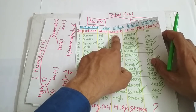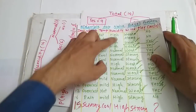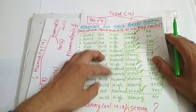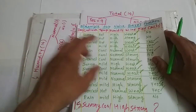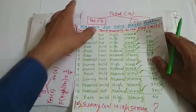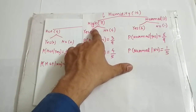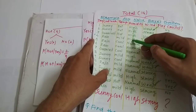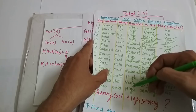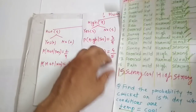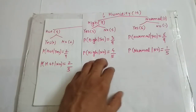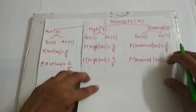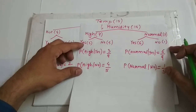For humidity, there are two different varieties of values — high and normal. So whatever we did for wind, we do the same for humidity. There are 14 records. High is coming 7 times and normal is coming 7 times. Dividing each into yes and no and finding the probabilities — using the same steps as for wind — we get the probability values for humidity. These are the probability values calculated for humidity.